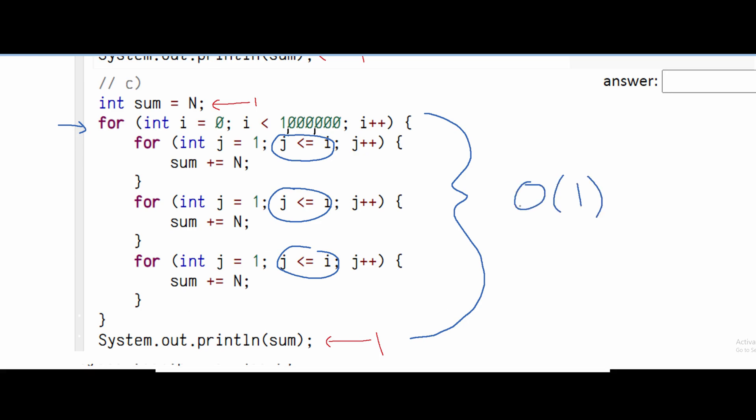That's because it's a constant time algorithm, and basically this can't grow. This is a fixed size at 1 million. It will never grow past 1 million, and that is why it is just O 1.